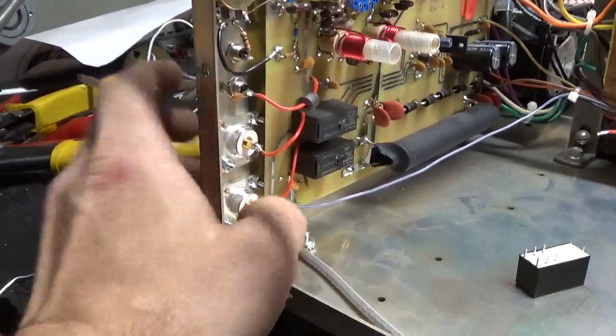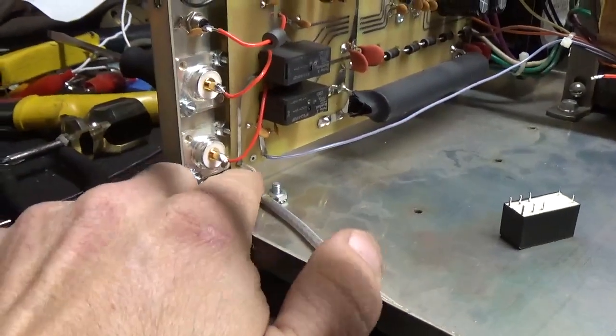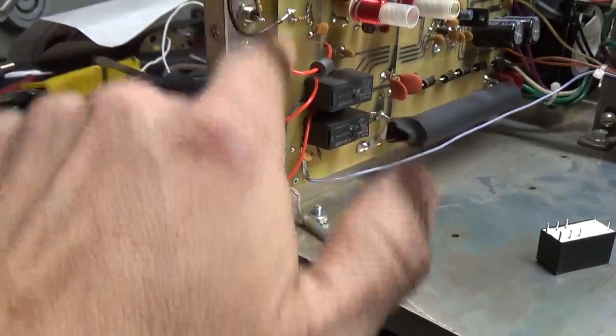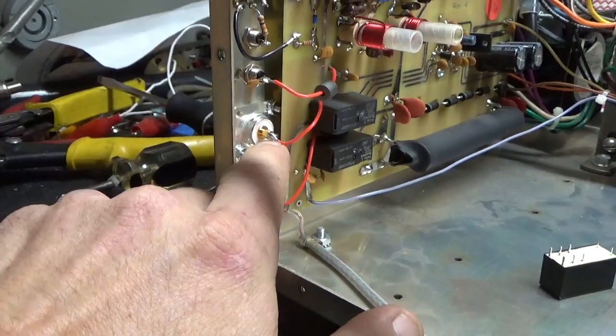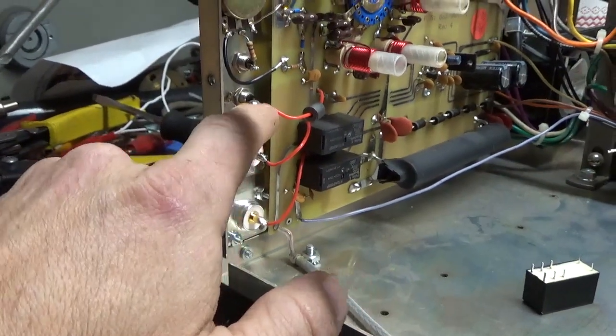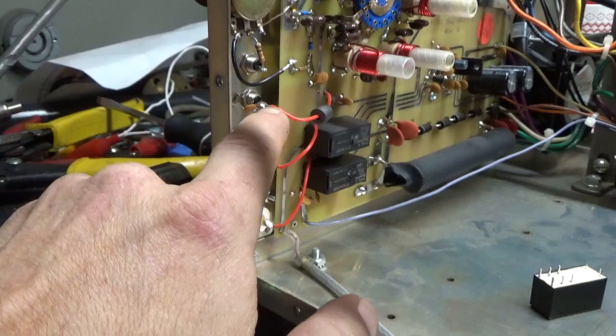So in order to get this out, what I do is I unsolder the output coax from the board carefully. I unsolder all of these connections. One from the input SO239, the output SO239, the ALC... No, that's the keyer line.